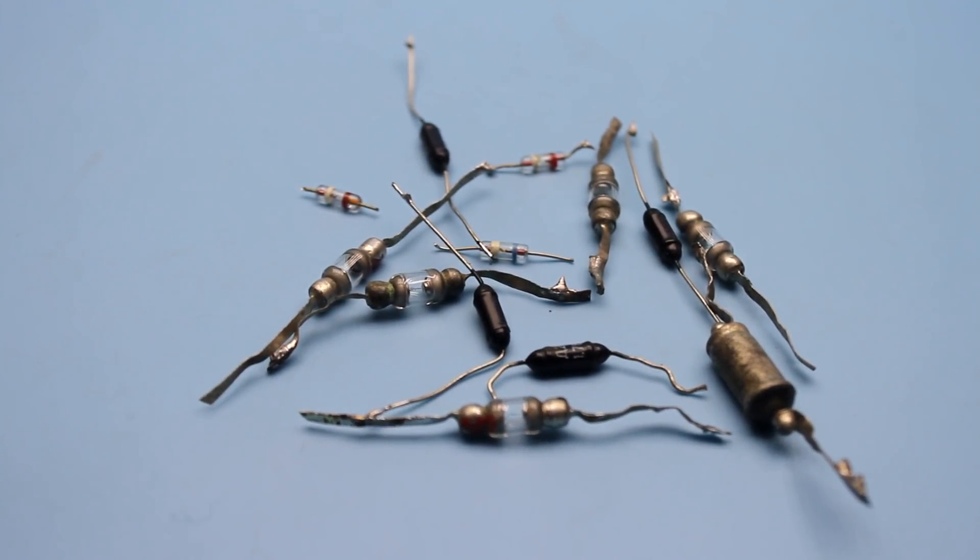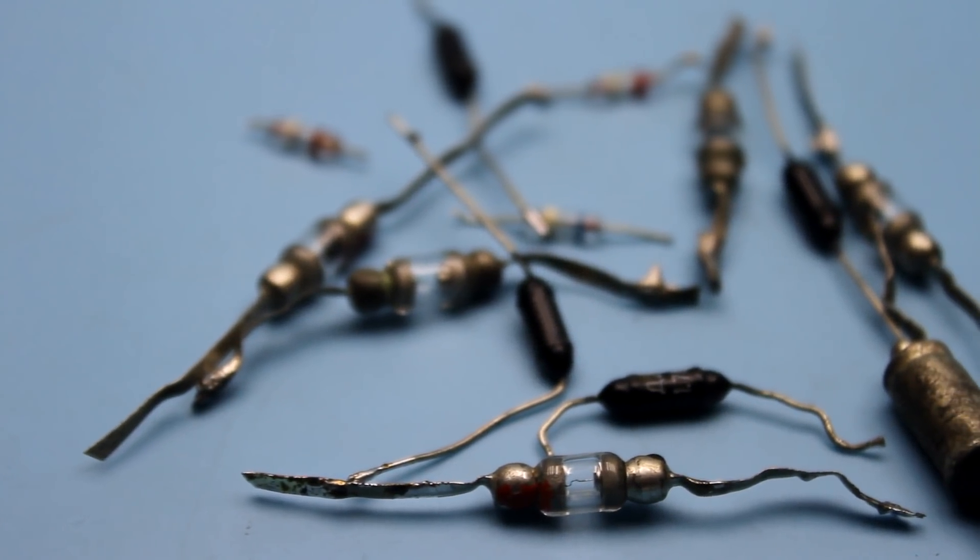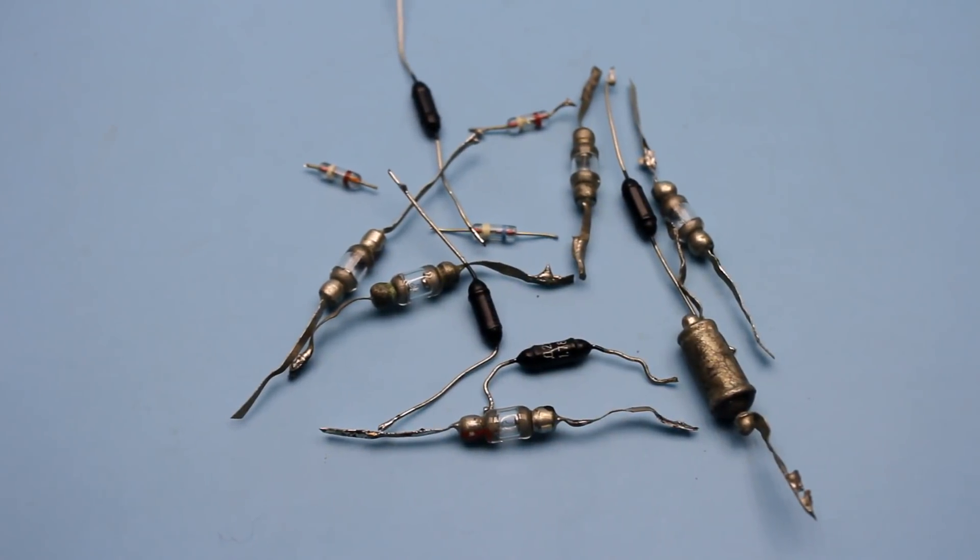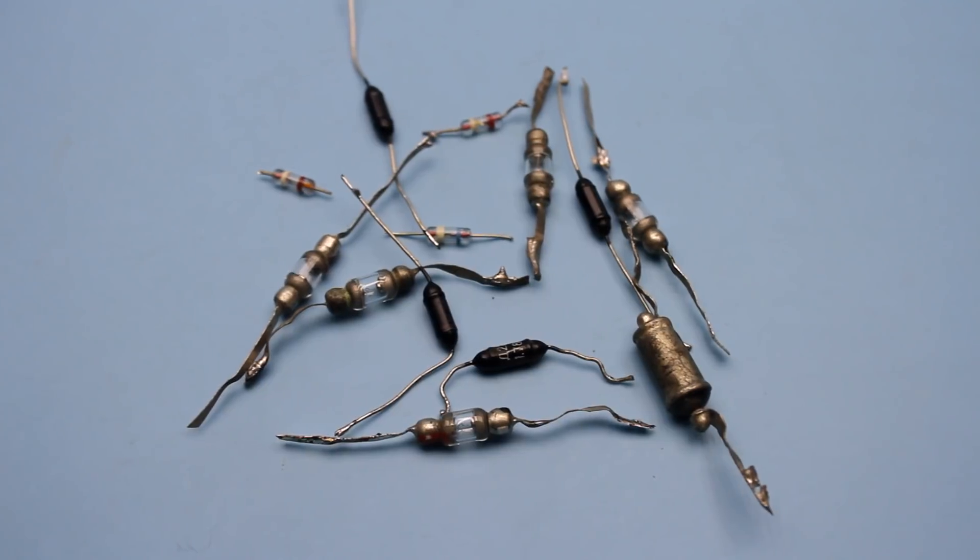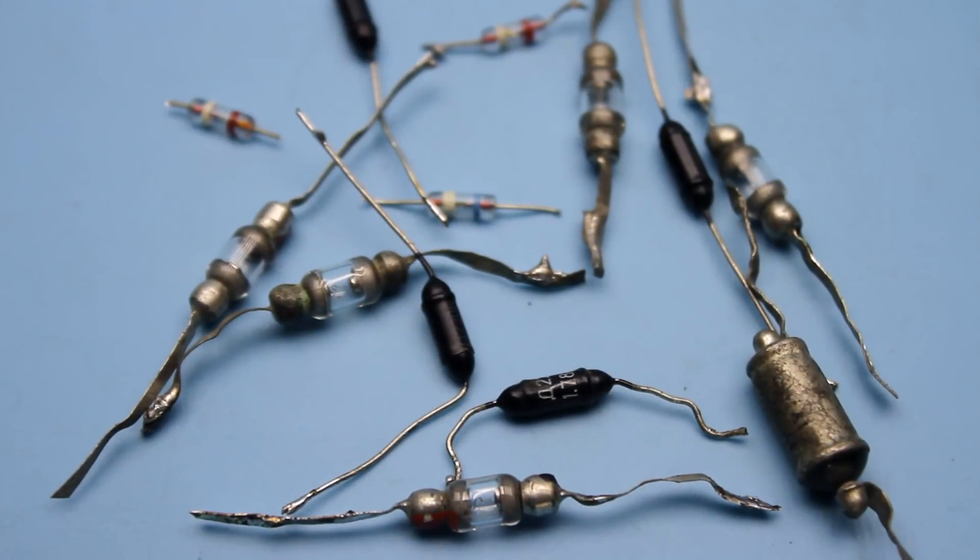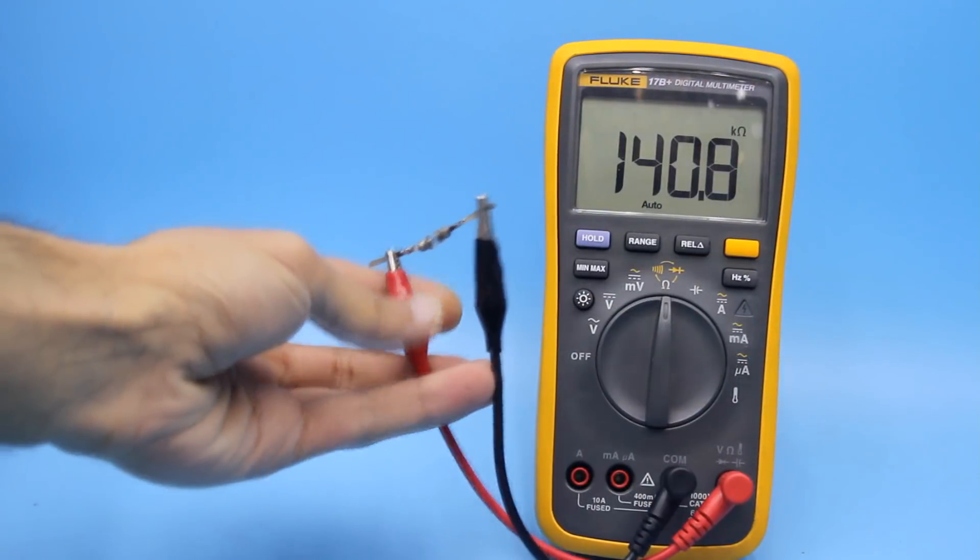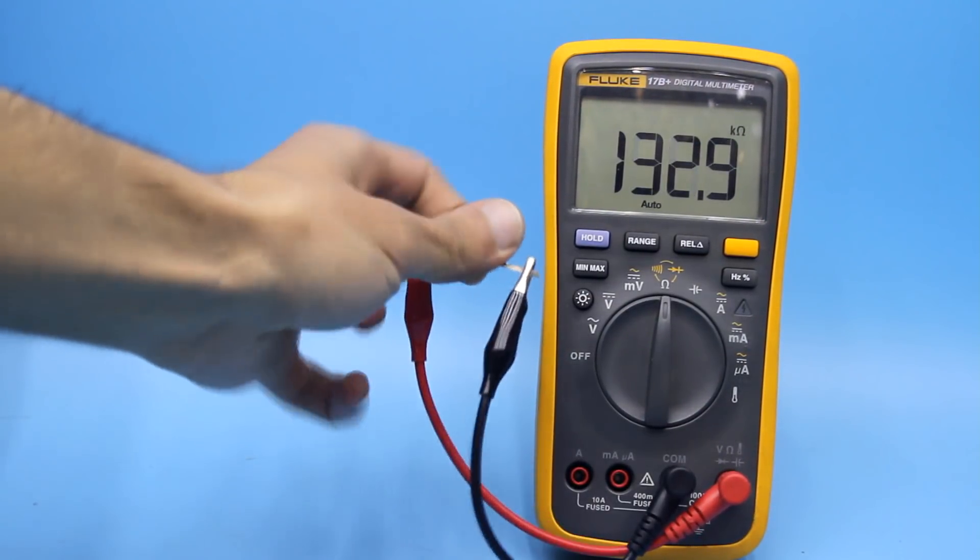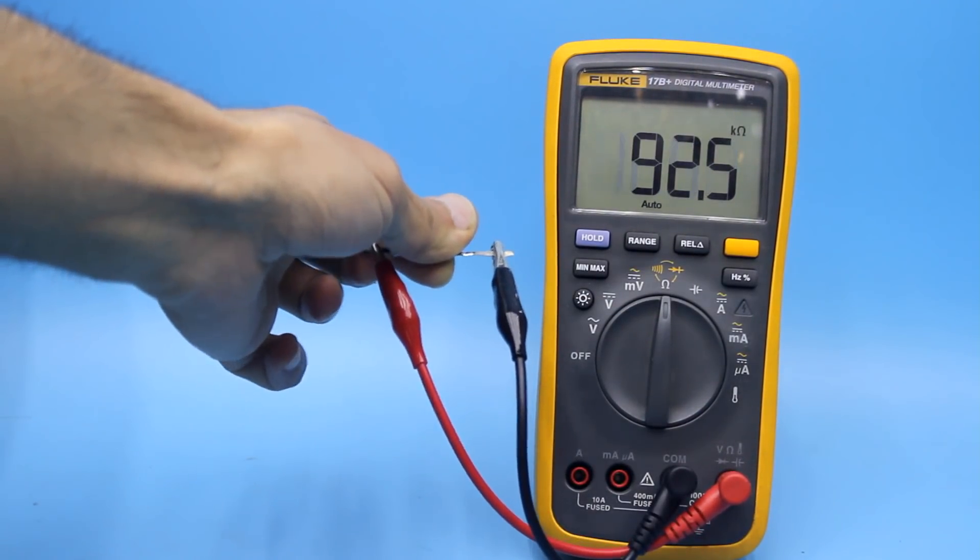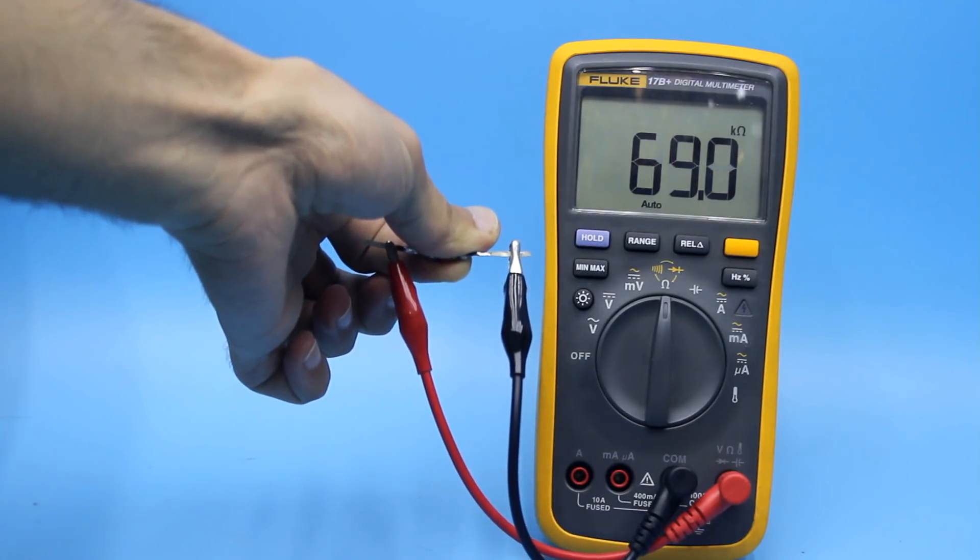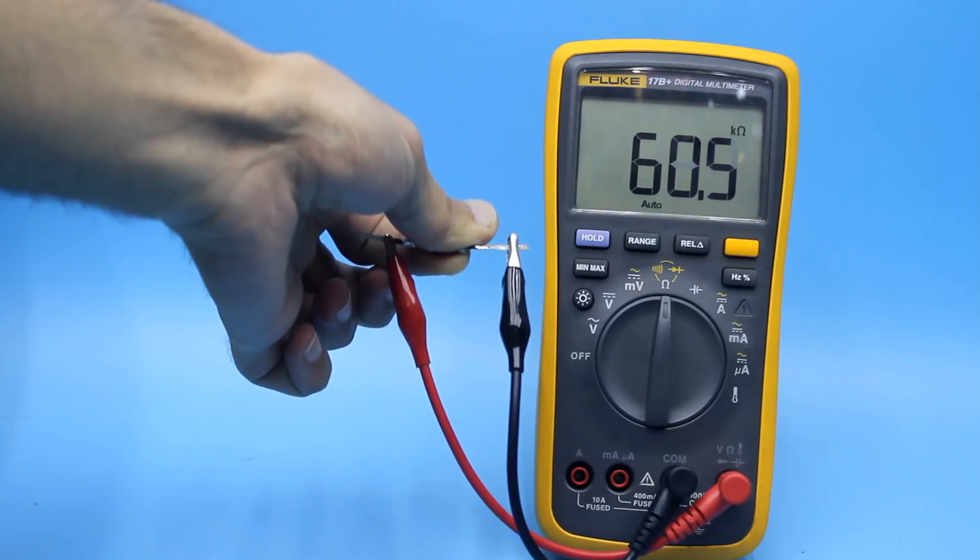In front of you is germanium diodes. They are many, many years old. The germanium technology has remained in the past because of significant shortcomings and high costs. One of these drawbacks is strong temperature dependence. By connecting a germanium diode to an ohmmeter, we see the initial resistance at room temperature. The temperature of our body is enough that the resistance of the crystal starts to drop sharply.